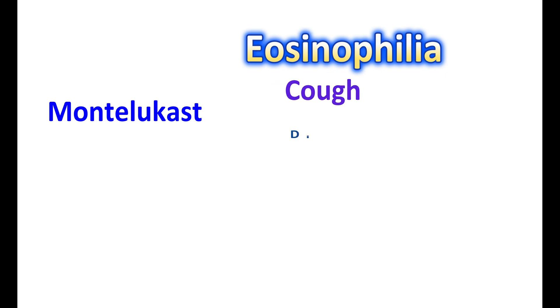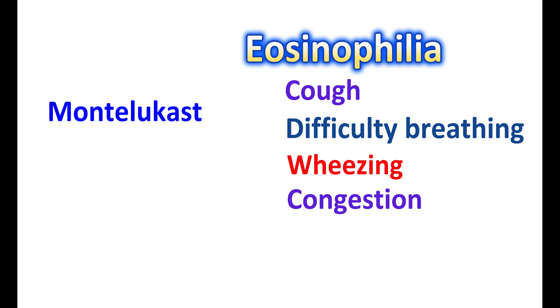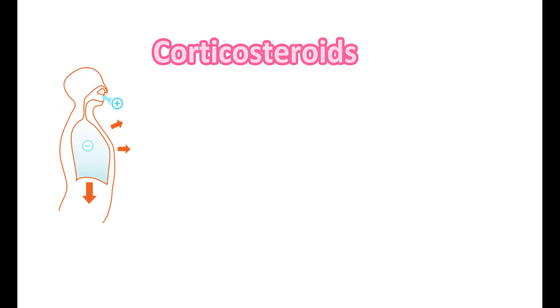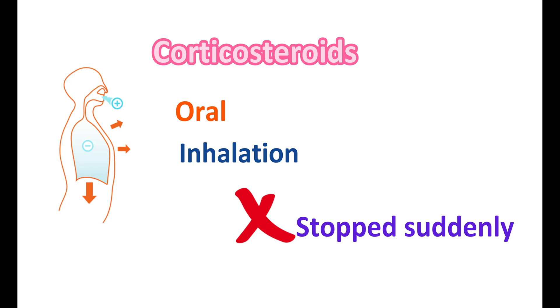Montelukast is not directly producing eosinophilia, but the risk may be associated with withdrawal of corticosteroid use. Eosinophilia is a condition of elevated levels of eosinophils, resulting in symptoms resembling asthma — such as cough, difficulty breathing, wheezing, nasal congestion, skin rashes, fatigue, and weakness. Corticosteroids are used as anti-inflammatory agents in asthma and allergic conditions via oral or inhalation routes. When they are stopped suddenly, they can increase the inflammatory response, resulting in eosinophilia. Therefore, corticosteroids should not be stopped suddenly; their dose should be gradually reduced while using Montelukast.